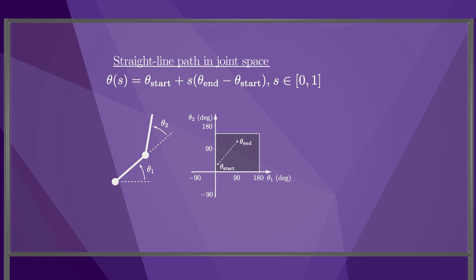A straight-line path in joint space is shown here for a 2R robot with 180 degrees of motion about its first joint and 150 degrees of motion about its second joint. The path can also be visualized in the workspace, as shown here. Note that the endpoint of the robot does not follow a straight line.